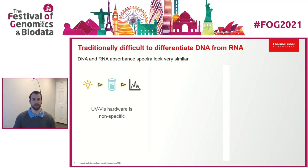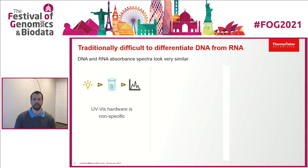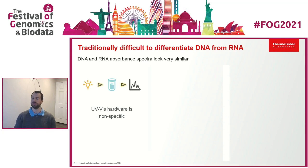We always start with a light source, and that light source shines light through the blank. The light going through the blank or the reference is read on the detector. Next, we read the light that is able to go through the sample, and that's measured on the detector. The light transmitted through the sample is compared to the reference or blank, and the light that's missing from the sample is referred to as absorbance.